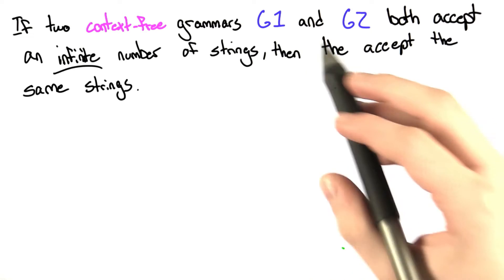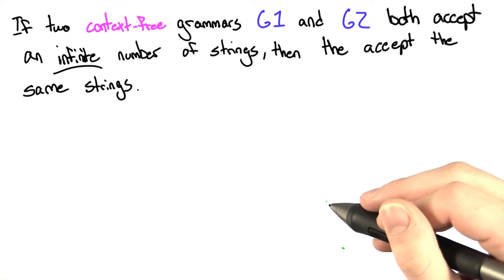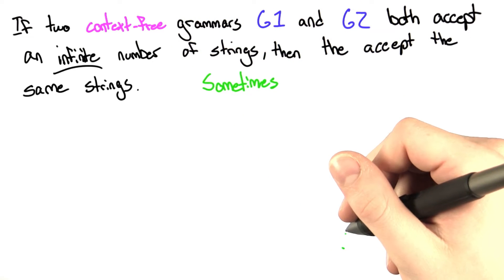If two context-free grammars, G1 and G2, both accept an infinite number of strings, then they accept the same strings. This is sometimes true. Let's think of a couple examples.